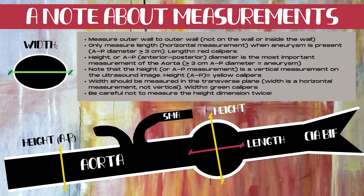For the aorta, we only measure the length when there's an aneurysm present. Aneurysms are generally classified as an AP or height dimension that's greater than or equal to three centimeters. When an aneurysm is present, we measure the length of the aneurysm itself. Note that length is a horizontal measurement on the ultrasound image, seen as the red set of calipers on this diagram, and this measurement must be placed parallel to the vessel walls.